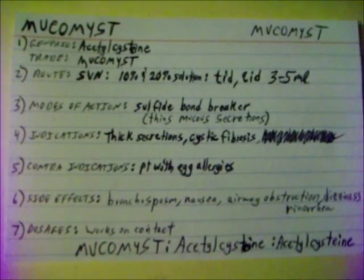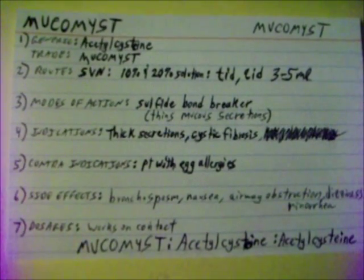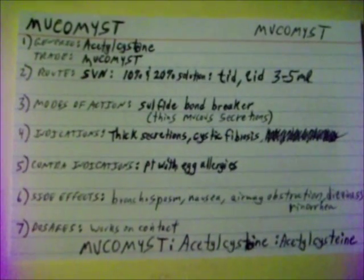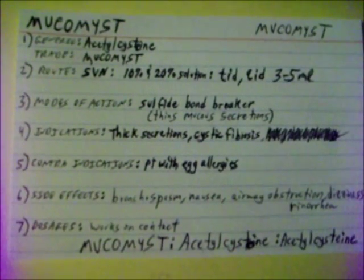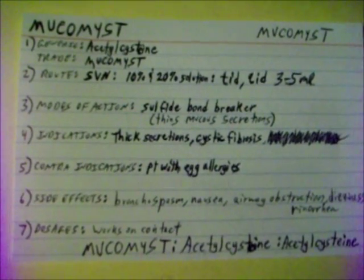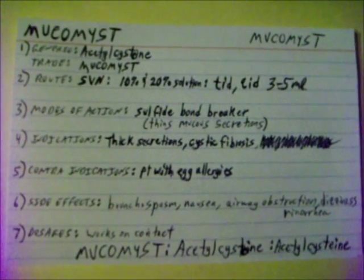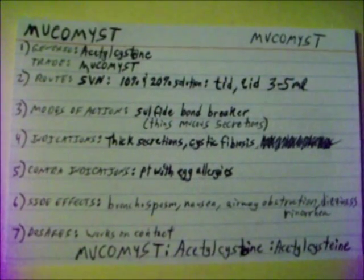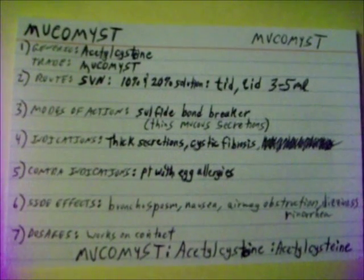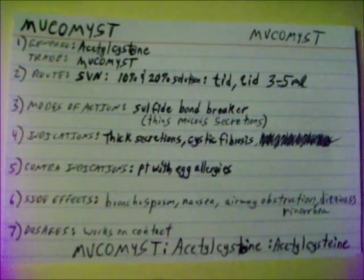Indications for Mucomyst: thinning secretions associated with cystic fibrosis. Contraindications: patients with egg allergies. Side effects are bronchospasm, nausea, airway obstruction, dizziness, and rhinorrhea. Mucomyst works on contact.